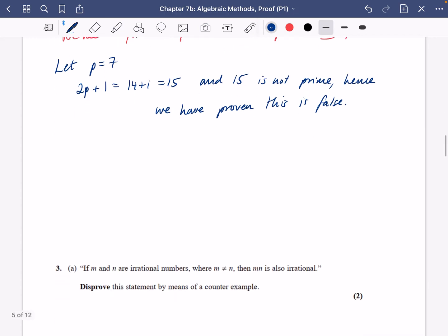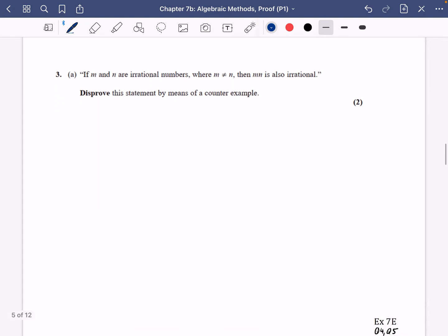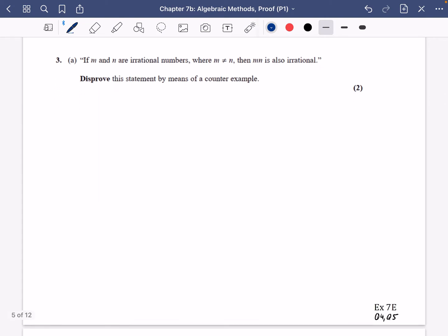Okay, we are going to have a look at another one. This one is going to come back to some of the things I mentioned earlier about irrational numbers. This time it says that if m and n are irrational numbers and m and n are not allowed to be equal to each other, then mn is also irrational.